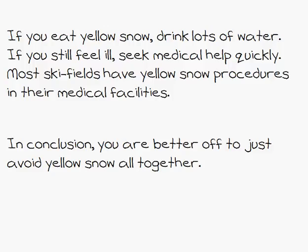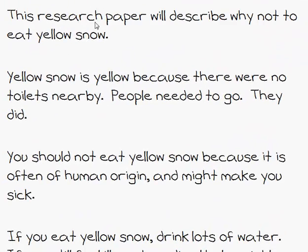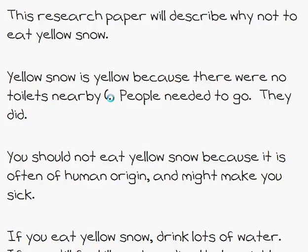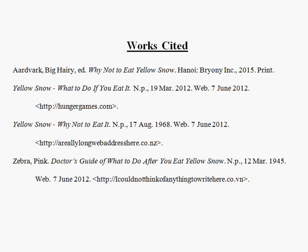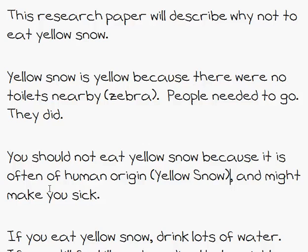There's nothing researched in the introduction, so I don't need to cite that. 'Yellow snow is yellow because there are no toilets nearby' — I read this in a book by Pink Zebra, so I will write 'Zebra' here. That backs that up. 'You should not eat yellow snow because it is of human origin' — I read that in a source called Yellow Snow: What to Do If You Eat It, so I will put 'Yellow Snow' as my source. 'It might make you sick' — I read that in the book by Mr. Aardvark.